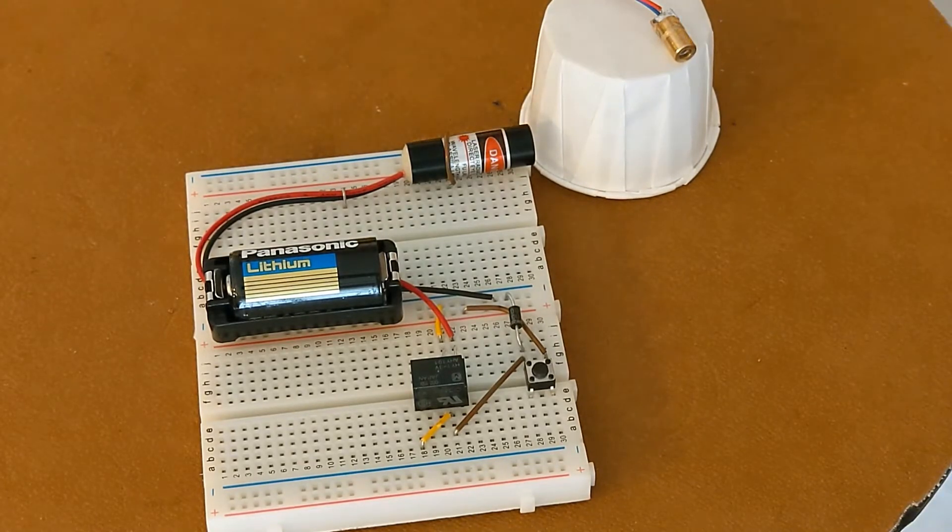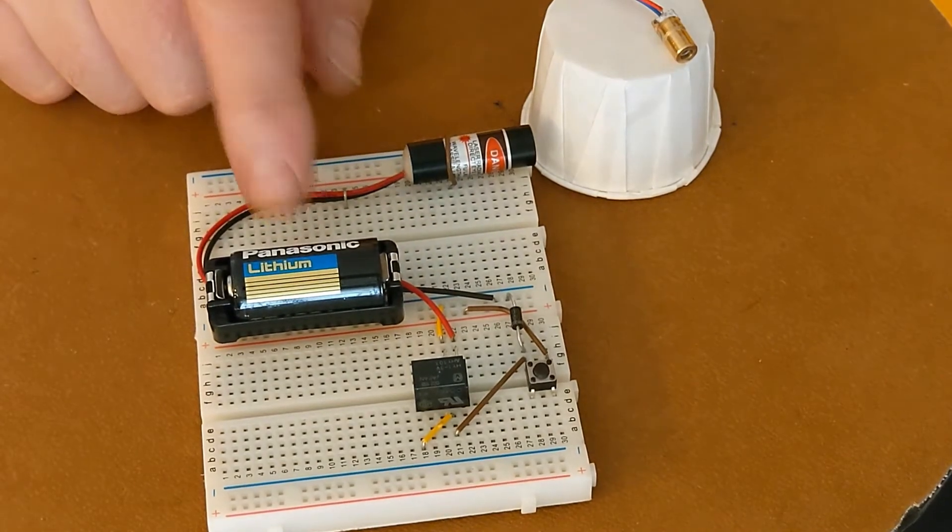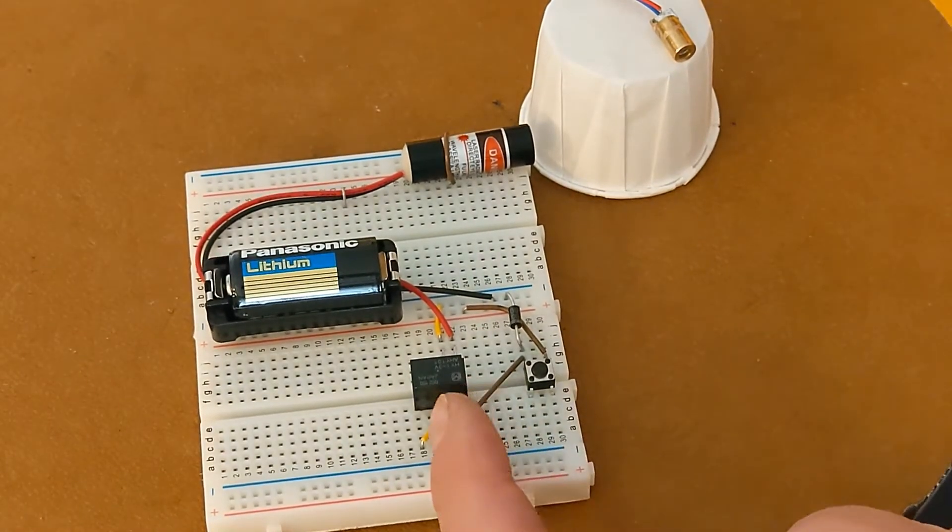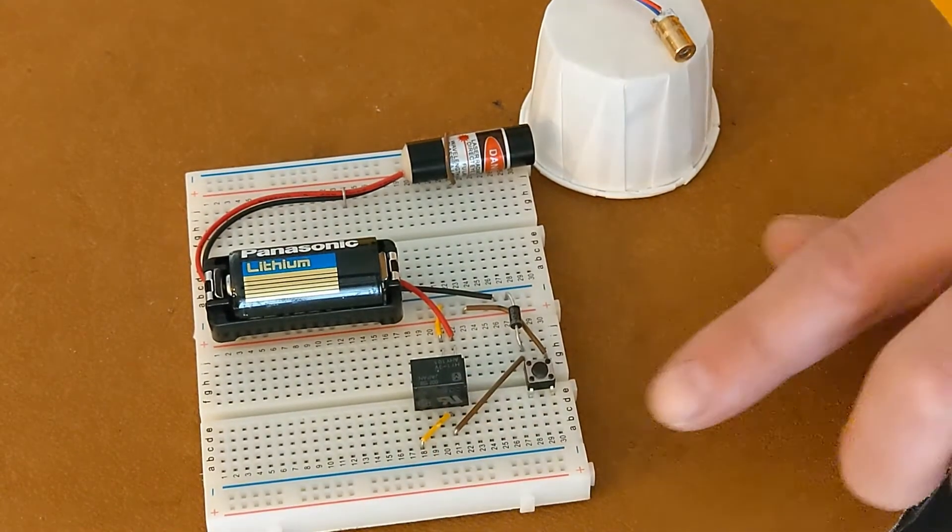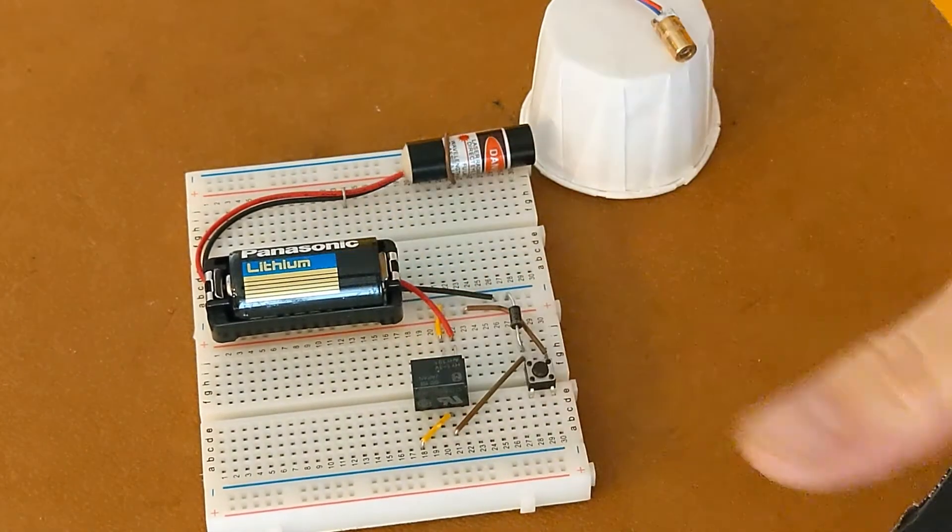So this circuit just has the CR123a battery, it's got a little 3 volt relay here, a normally open switch that activates the relay and the module when you press it.